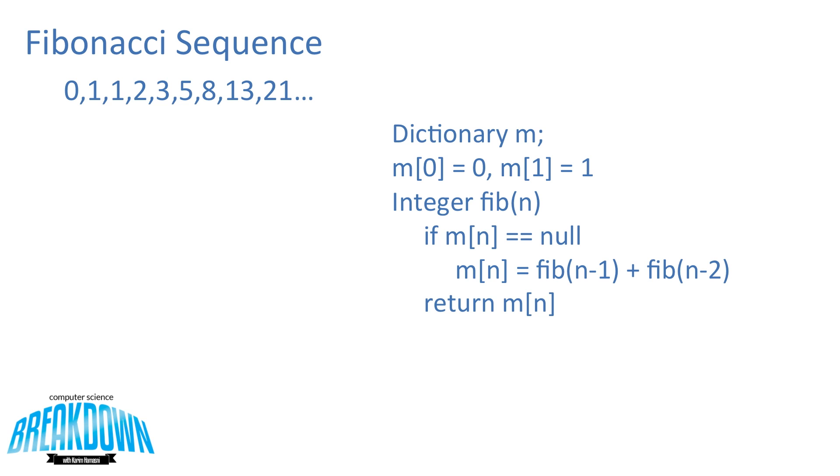In this case, we're going to use a dictionary. A dictionary holds indexes and values at those indexes. So, what this formula does here is first we set the value at index equal to 0, and we set the value there equal to 0. At index 1, we set the value equal to 1. Below these initial variable sets, we have a function called fib that takes a parameter n and returns an integer value.